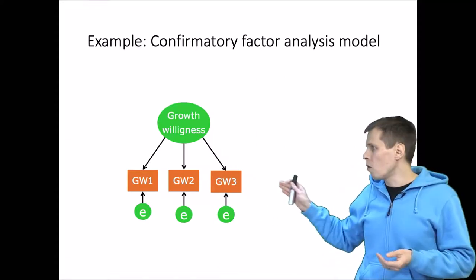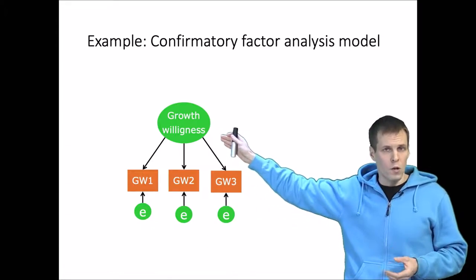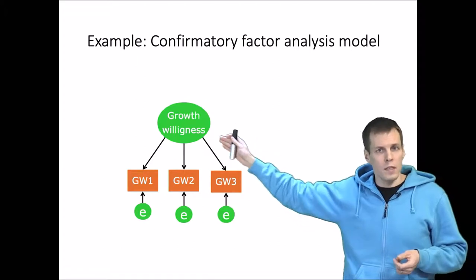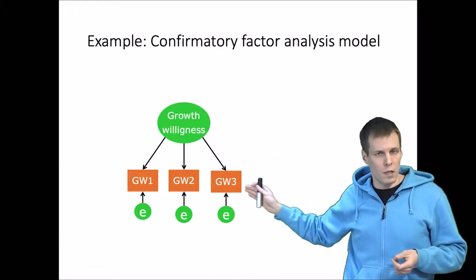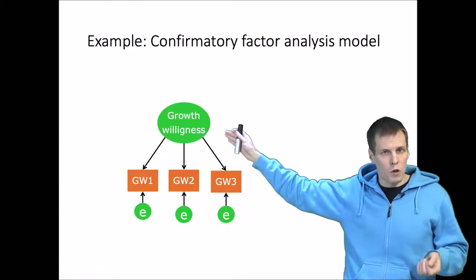We say that all these indicators are affected by one common factor, which is represented by a latent variable in the model. Then we want to estimate how much of the variation in the indicators can be attributed to this one unobserved common source.